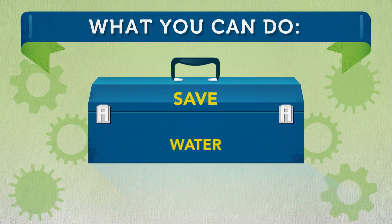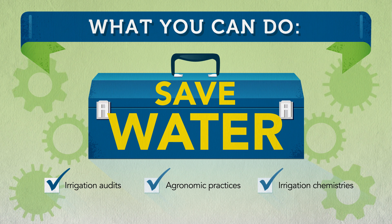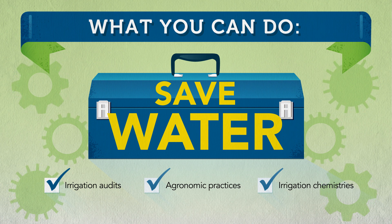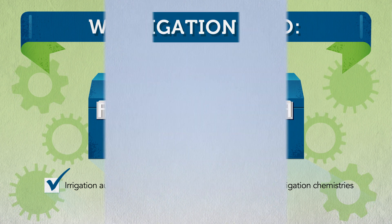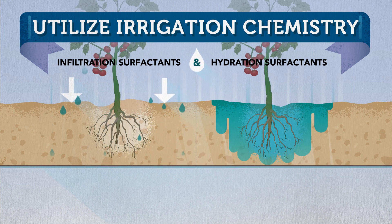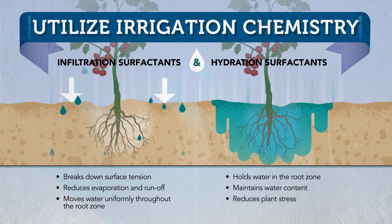Growers can save water, energy, and reduce costs by auditing irrigation systems, following good agronomic practices, and now by using new, innovative irrigation chemistries. Irrigation chemistries come in two basic types: infiltration surfactants and hydration surfactants.